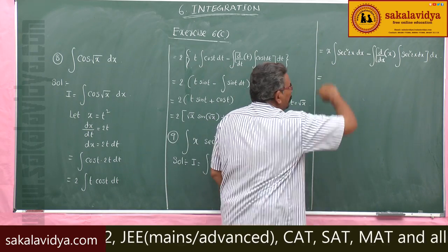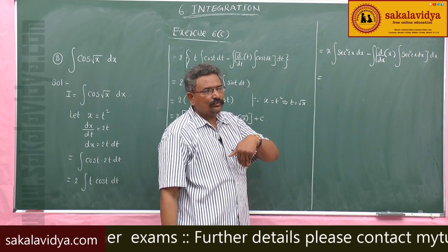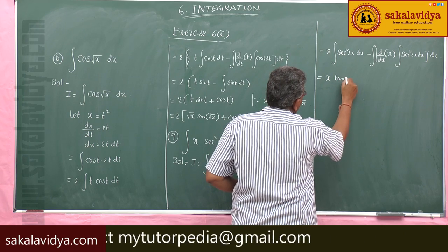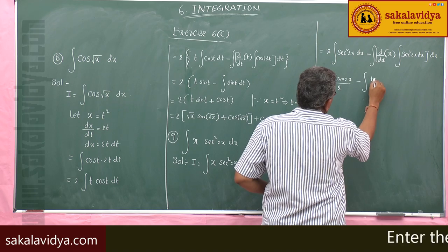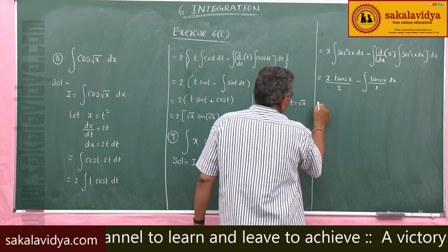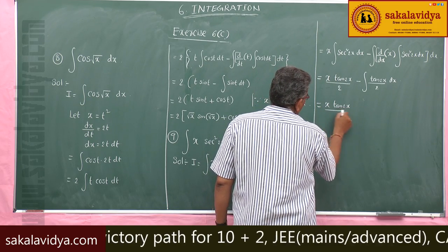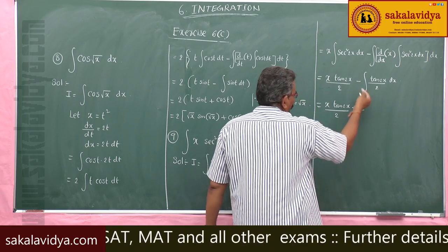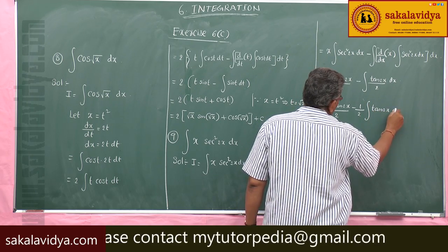The integral of sec²(2x) dx is tan(2x)/2. So this becomes x·tan(2x)/2 − integral of tan(2x)/2 dx, which is x·tan(2x)/2 − (1/2) · integral of tan(2x) dx.